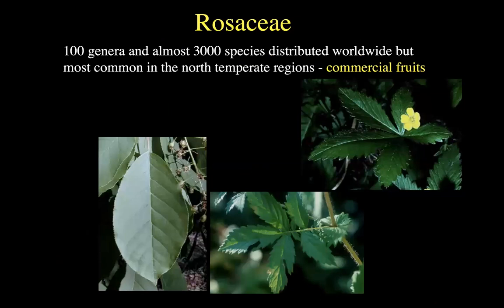Now we're going to move on to the two monster families of the day: the Rosaceae and the Fabaceae. The Rosaceae is a globally important family, particularly in the northern hemisphere temperate regions, and it's the source of many of our most beloved commercial fruits: apples, plums, peaches, cherries, strawberries, raspberries, almonds, blackberries. Many of the most tasty things are in the Rosaceae.